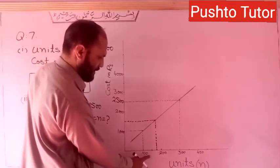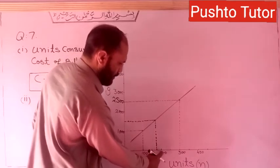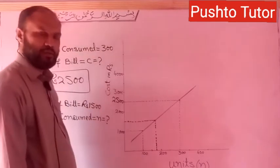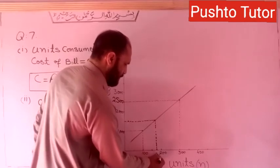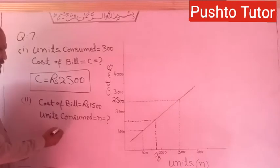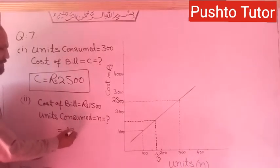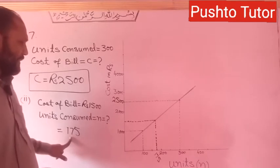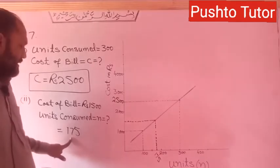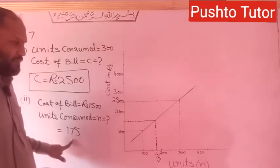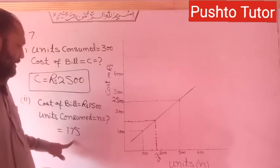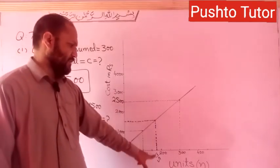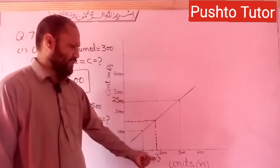So 1,500 RS gives us a midpoint of approximately 175 units consumed. The book gives an answer of 150, but from the graph the reading is 175. So the units consumed from the graph is 175.